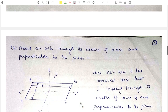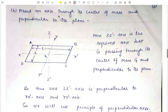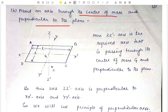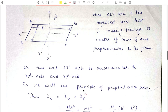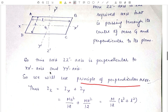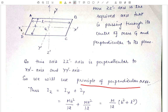Now our next case is to find out the moment of inertia of the lamina about an axis passing through its center of mass G but perpendicular to its plane. Suppose Z is the required axis passing through G and perpendicular to the plane. Since this axis is perpendicular to the plane, it will naturally also be perpendicular to the two axes XX' and YY'. Therefore here we will use the principle of perpendicular axes.